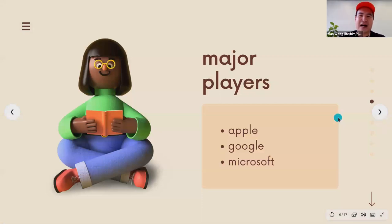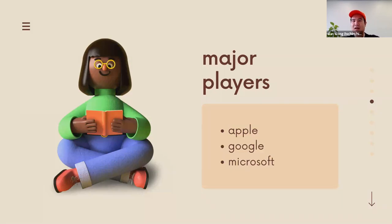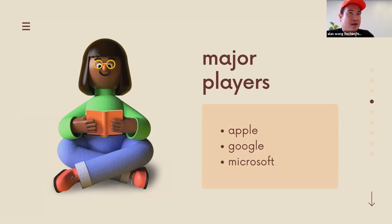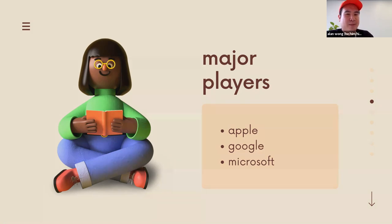So, major players — Apple, Google, and Microsoft. There are other players I want to acknowledge: Samsung and Amazon. Apple is a good closed system — they make hardware and software. Google mainly makes software but is slowly getting into the hardware business. Microsoft makes hardware and software.